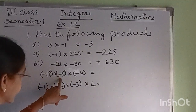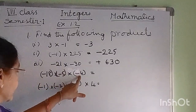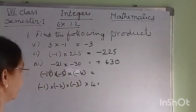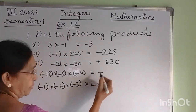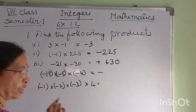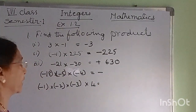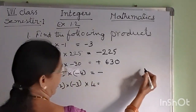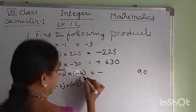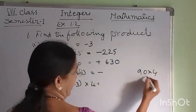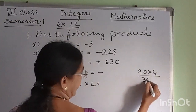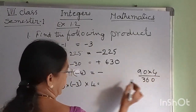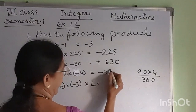Minus 18 into minus 5 into minus 4: there are three negative signs, which is an odd number, so we get a negative sign. Computing: 18 times 5 is 90, and 90 times 4 is 360. Therefore the answer is minus 360.